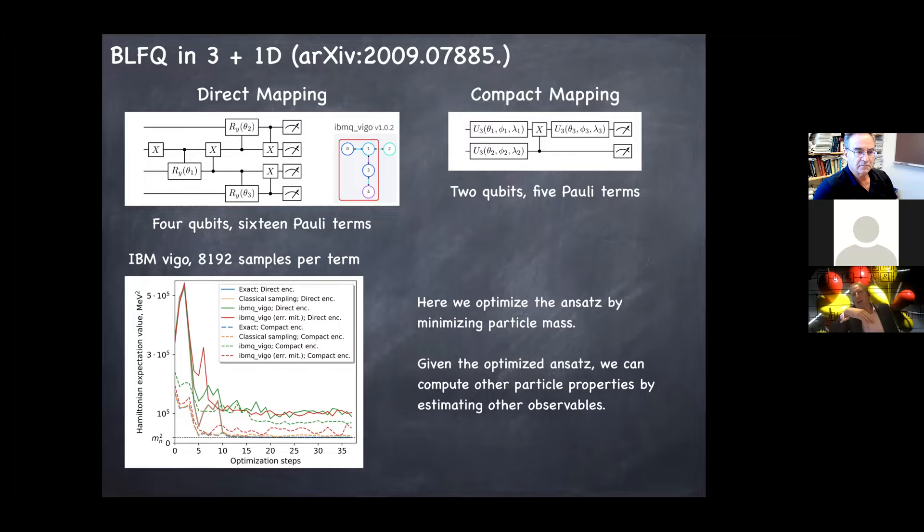We use a VQE calculation, which we do both in a direct mapping and in a compact mapping. The direct mapping has four qubits and 16 Pauli terms, and the compact has two and five respectively. And we just throw it on the publicly available IBM machine. And what we do here is we minimize the eigenstates of the mass matrix. So we're going for the lowest mass particle in the interacting theory, which should be the rho plus. Then once we've obtained those optimal ansatz parameters, then we want to go back and compute some other properties. And after all, you can measure the particle mass, you can look it up in the particle data group, and you know that. So one thing you might be interested in is the charge radius of the particle. Now you know the particle's mass and you know how big it is. This is, you know, it's a very simple particle.